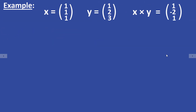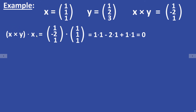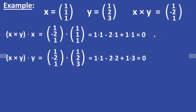Let's verify this with our last example. The dot product of the cross product (1, −2, 1) and X = (1, 1, 1) is equal to 1 times 1 minus 2 times 1 plus 1 times 1, which equals 0. So as stated, the cross product is always orthogonal to X and Y.